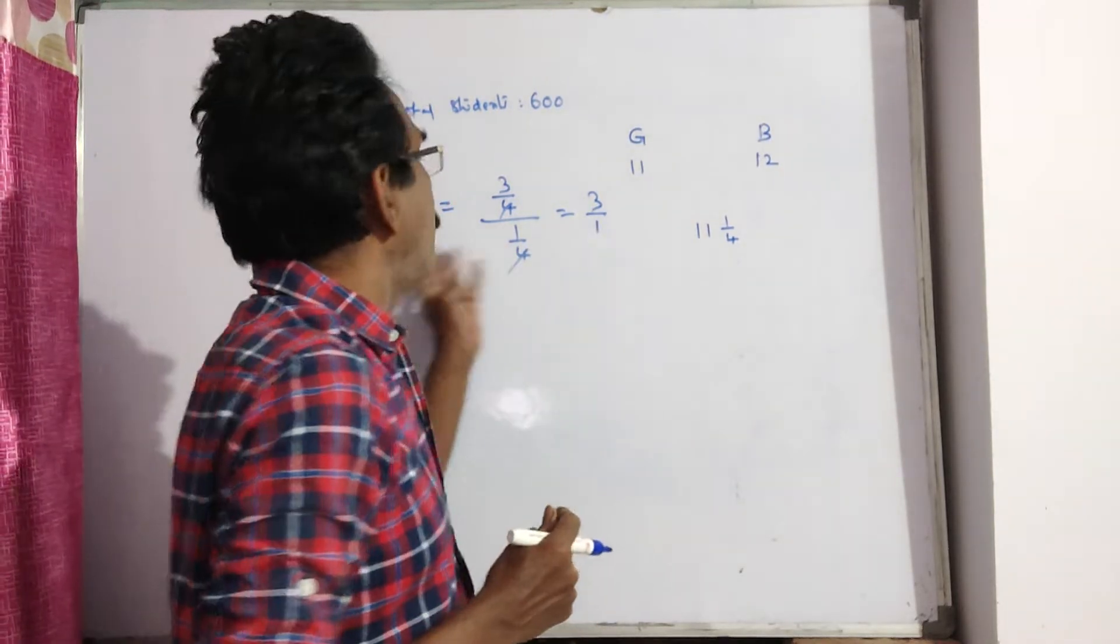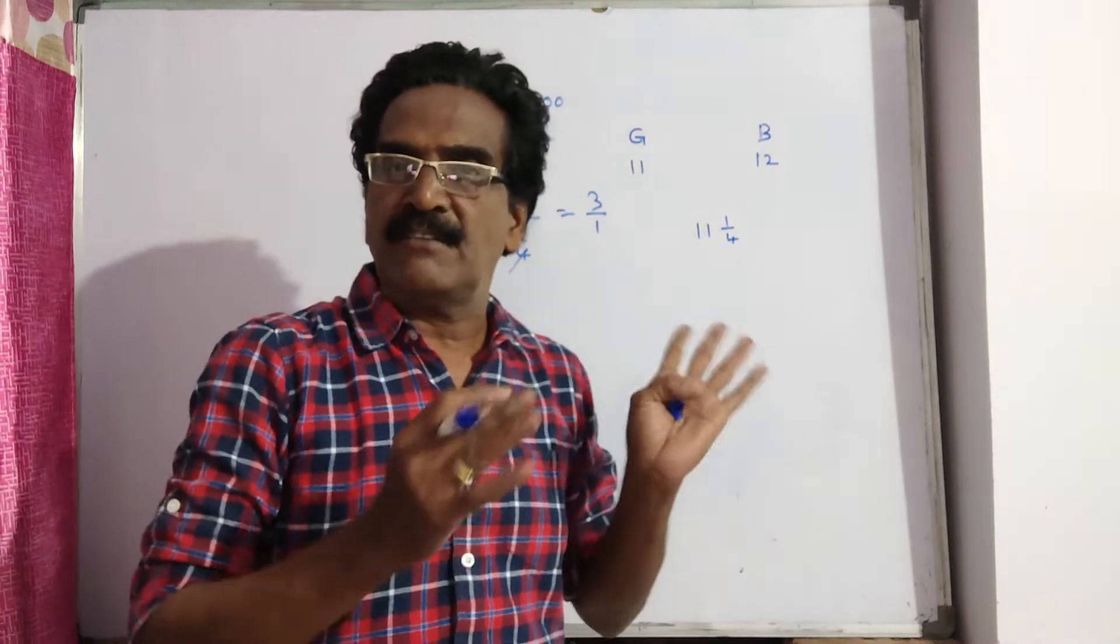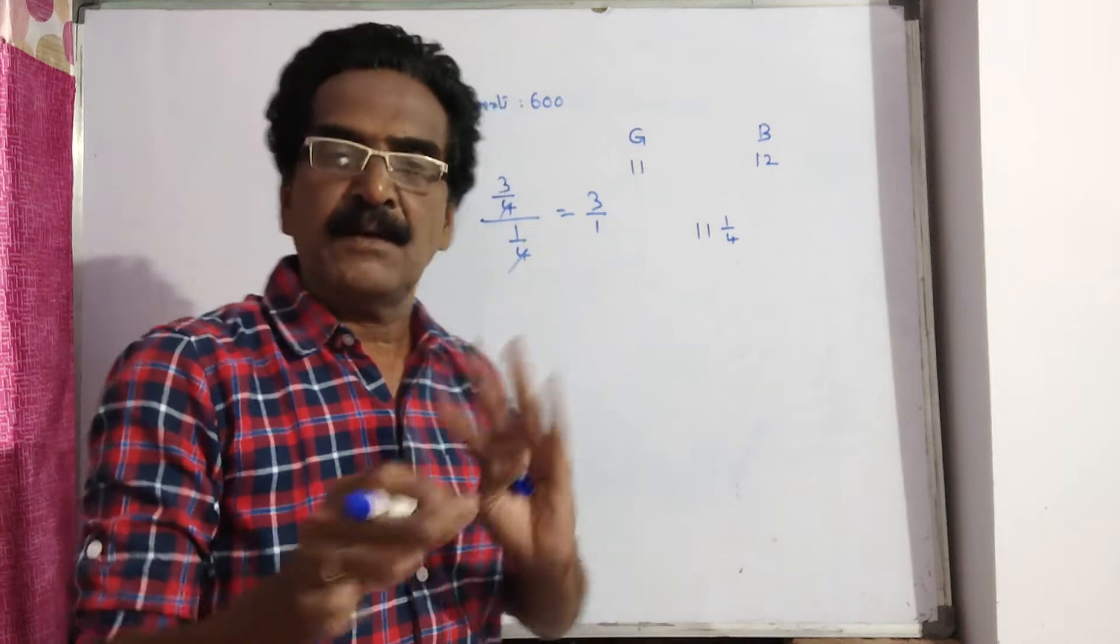So, the ratio of girls and boys is 3 is to 1. So, total number is 600. We have to divide the 600 in the ratio 3 is to 1 to get the number of girls and boys.